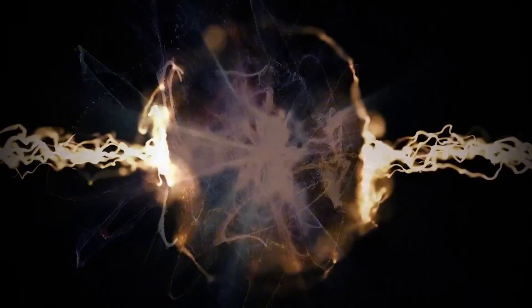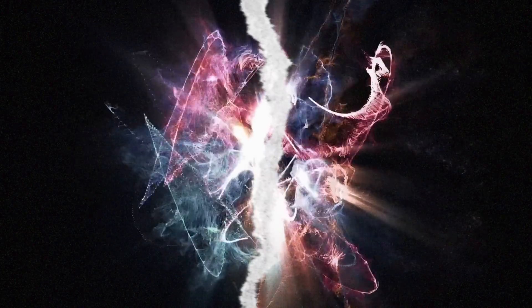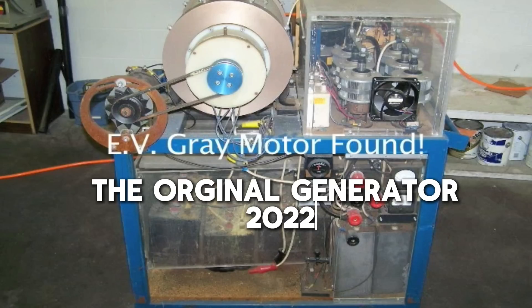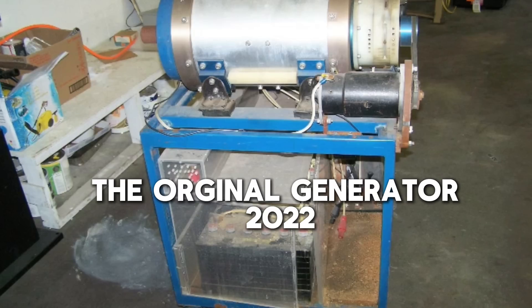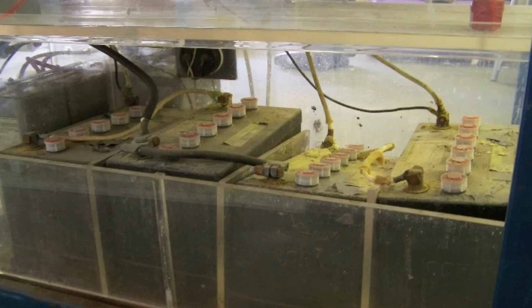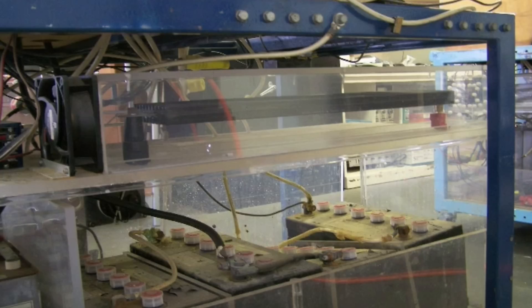In the early 1970s, Gray made a groundbreaking discovery that would forever change the landscape of energy generation. While working on a project to improve the efficiency of electrical motors, he stumbled upon a remarkable phenomenon – the ability to generate electricity without the need for a traditional power source. This discovery, which he later dubbed the Gray motor, would become the foundation of his revolutionary free energy generator.